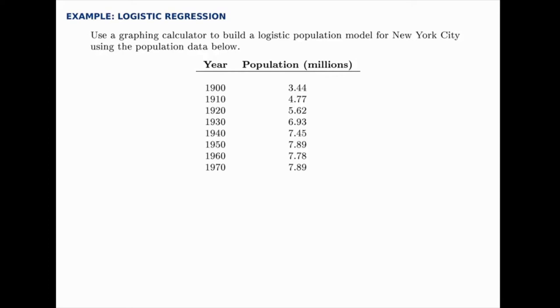In this example we use a graphing calculator to build a logistic population model for New York City. We're given some population data from 1900 to 1970 and the population is given in millions.